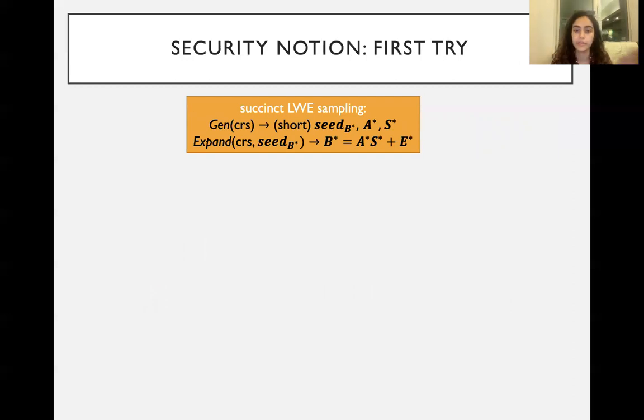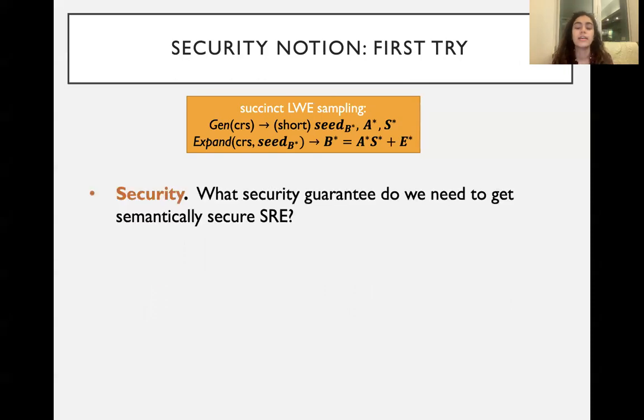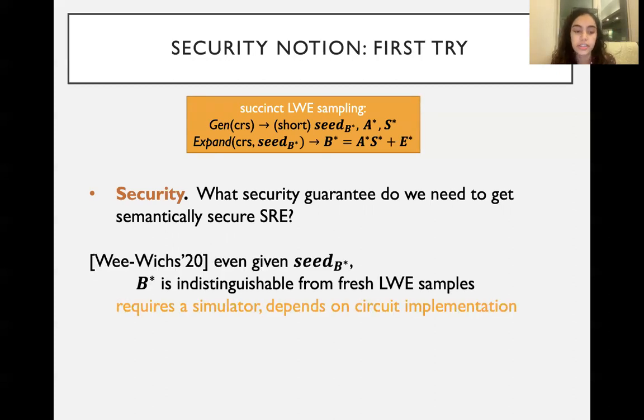Okay, let's revisit the security notion. Now that we've covered correctness and succinctness, which are pretty simple to define, the question is what security guarantee do we really need in order to be able to upgrade this and use it to create a semantically secure SRE in the way that I just described. So first, we'll remember the definition from Wee-Wichs, which basically asks that even if you're given the seed, B* still looks indistinguishable from fresh LWE samples. Here, by fresh LWE samples, we mean like ideal ones with truly random S and Gaussian E. Unfortunately, this definition requires a simulator. It depends on the circuit implementation, by which I mean basically you're homomorphically evaluating and the way that that evaluation is implemented actually affects the security of this scheme. There was a paper last year also showing that for a specific circuit implementation, this is actually broken. There's other circuit implementations for which it's not broken, but the point being this assumption is too complicated and we want something much simpler and easier to work with.